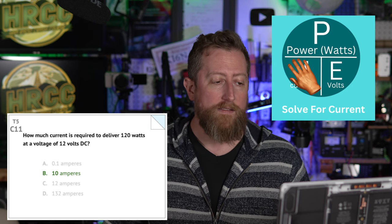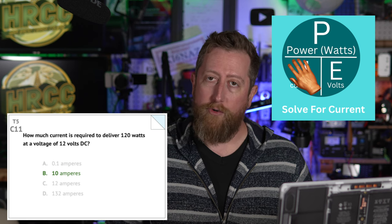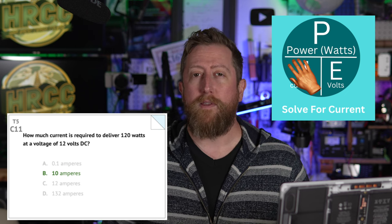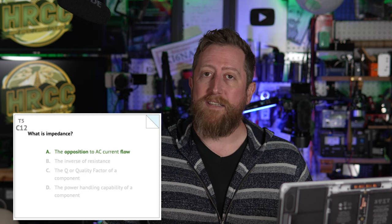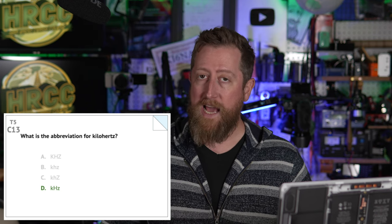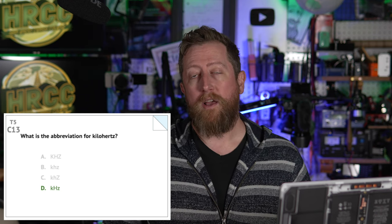Charlie 11: how much current is required to deliver 120 watts at a voltage of 12 volts? Do the reverse — 120 divided by 12 gives you the answer of B, 10 amperes. Charlie 12: what is impedance? The answer is A, the opposition to AC current flow. Charlie 13: what is the abbreviation of kilohertz? This is also very important — a lowercase k, an uppercase H, and a lowercase z. Flying right through this.